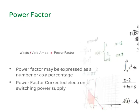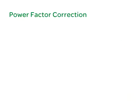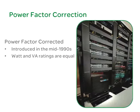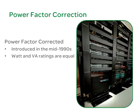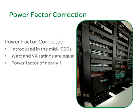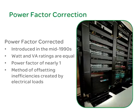Next, we will look at one type of electronic switching power supply: power factor corrected. Power factor corrected power supplies were introduced in the mid-1990s and have the characteristic that watt and VA ratings are equal. That is, they have a power factor of nearly 1. Power factor correction is simply a method of offsetting inefficiencies created by electrical loads.